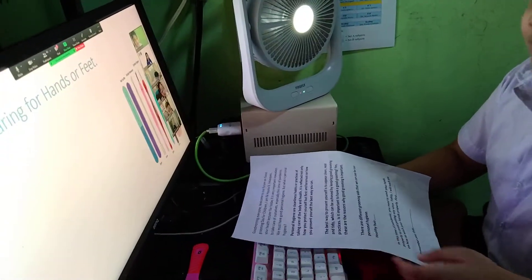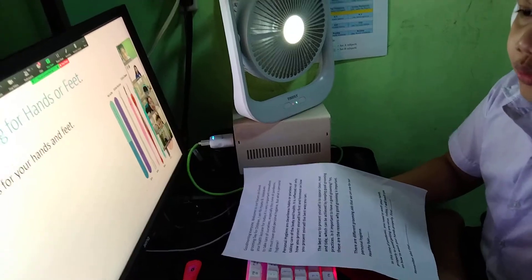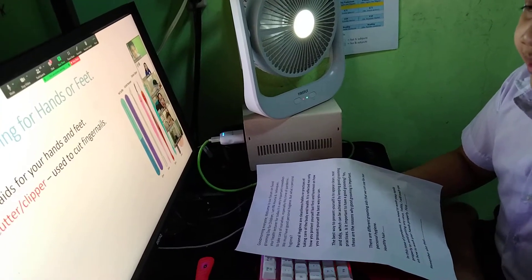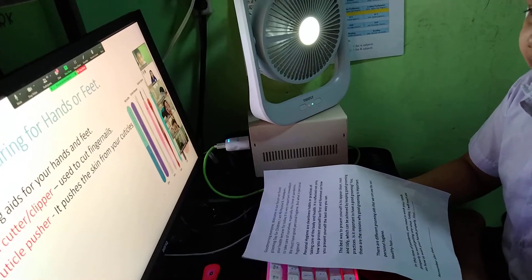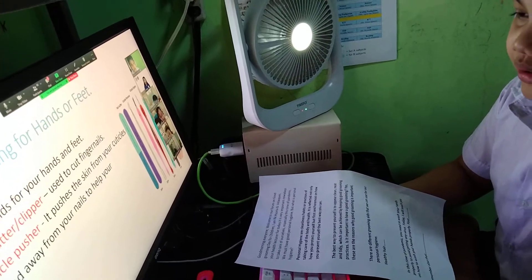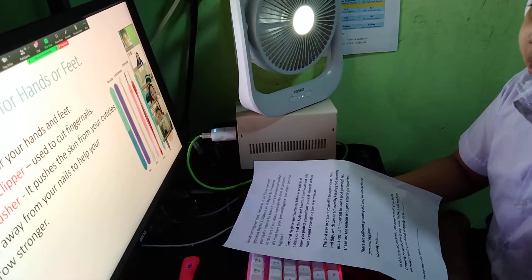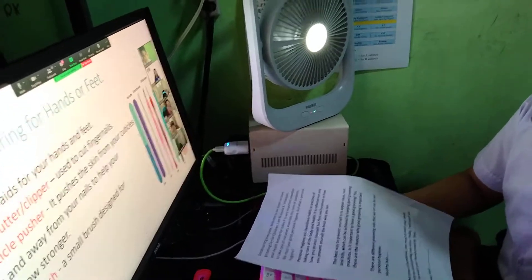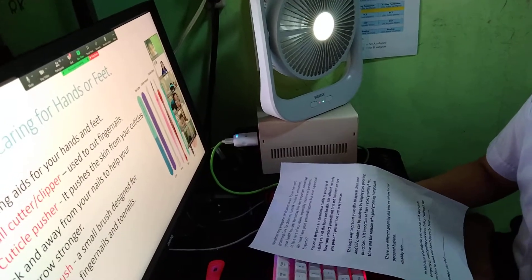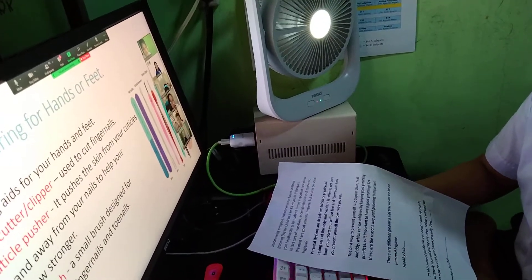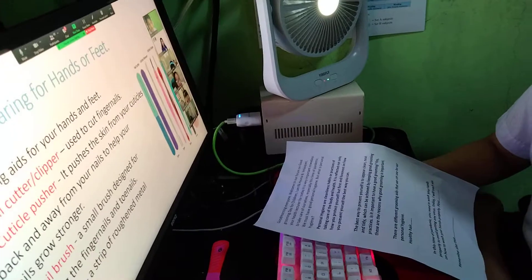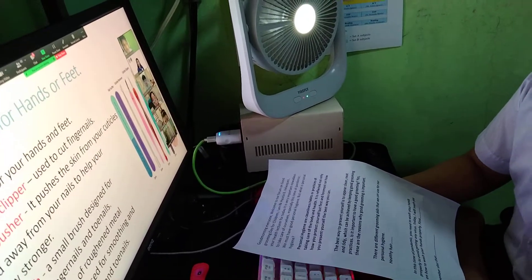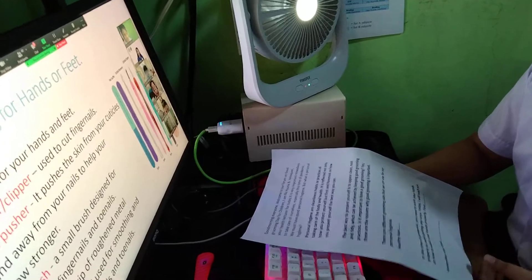Proper caring for hands or feet. Grooming aids for your hands and feet: Nail cutter or clipper is used to cut fingernails. Cuticle pusher pushes the skin from your cuticles and back away from your nails to help your nails grow stronger. Nail brush, a small brush designed for cleaning the fingernails and toenails. Nail file: a strip of roughened metal or an emery board used for smoothing and tripping the fingernails and toe nails.